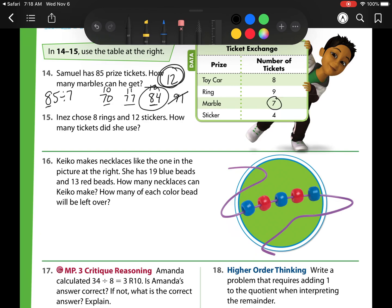Inez chose 8 rings and 12 stickers. How many stickers did she use? Well, I see this one. I have 8 rings. And rings cost 9. So 8 groups of 9 is 8 times 9. This is a multiplication problem. We're going the opposite direction. She spent 72 tickets on rings and stickers cost 4. She bought 12 of them. So I have 12 groups of 4. So 12 times 8 is 48. And then since she bought both of them, we have to combine them. So 72 plus 48 is 120. So she spent 120 tickets.